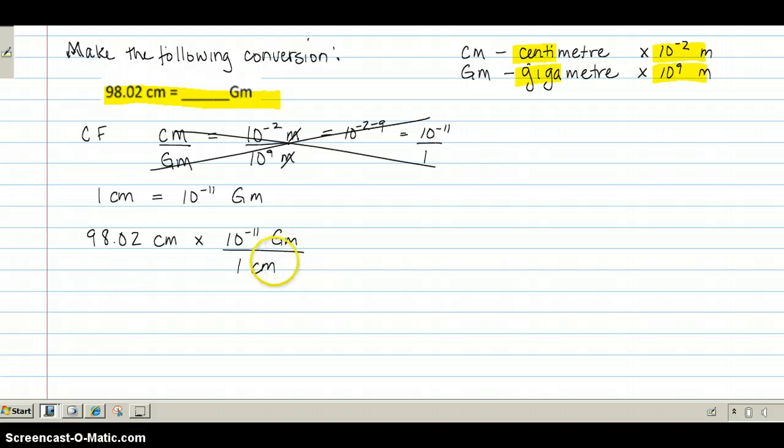I can cancel the units because I've got cm in the top and in the bottom. And so my final answer then would be 98.02 times 10 to the minus 11 gigameters.